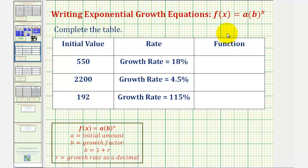We're going to write the exponential growth functions given the initial value and the growth rate expressed as a percentage. We'll write the exponential growth functions in the form f of x equals a times b raised to the power of x, where a is the initial amount and b